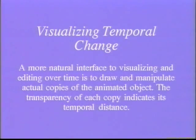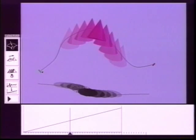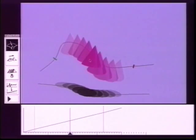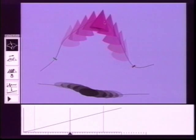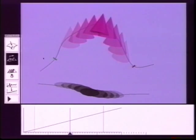A more natural interface to visualizing and editing animation is to draw and manipulate actual copies of the animated object instead of tick marks. The transparency of each copy indicates its temporal distance from the current time. This visualization scheme also allows visualization of scale and rotation.